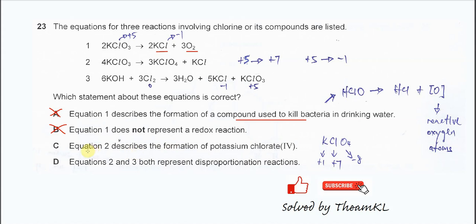For C, equation 2 describes the formation of potassium chlorate 4. So reaction 2 forms KClO4. We know that oxygen is negative 8 because it's negative 2 times 4.